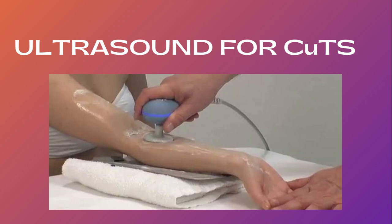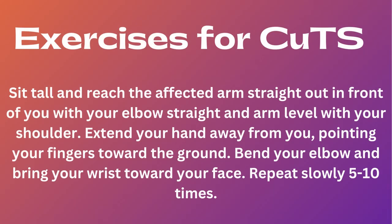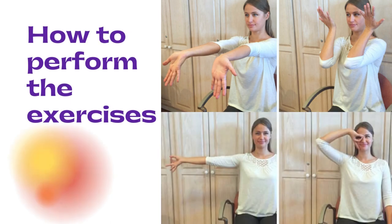After the electrotherapy modalities, we come to manual therapy. The exercises for cubital tunnel syndrome are: sit tall and reach the affected arm straight out in front of you with your elbow straight and arm level with your shoulder, then extend your hand away from you pointing your fingers towards the ground, bend your elbow and bring your wrist towards your face, and repeat slowly five to ten times. This slide shows how to perform all the manual therapy exercises at home for cubital tunnel syndrome.